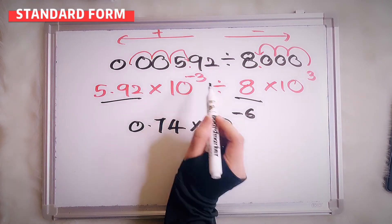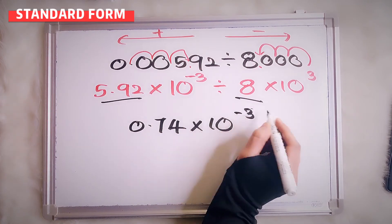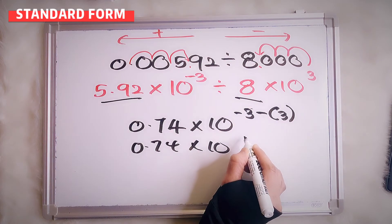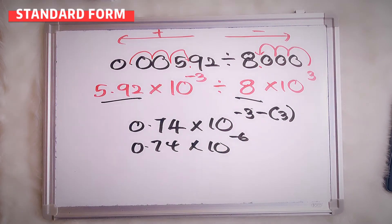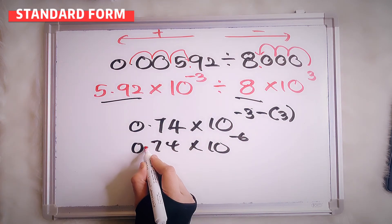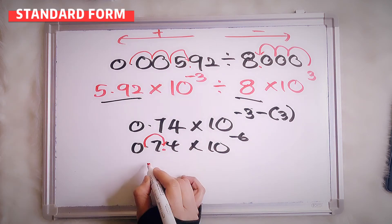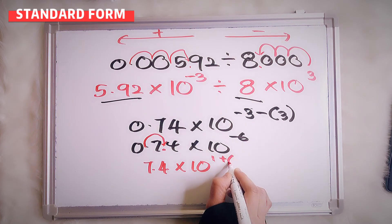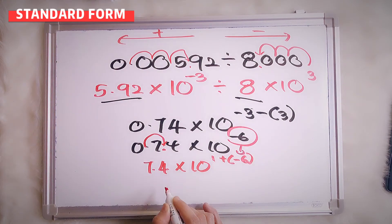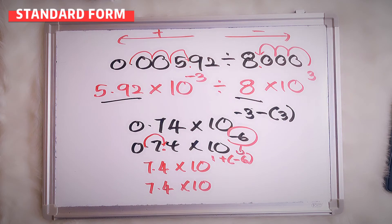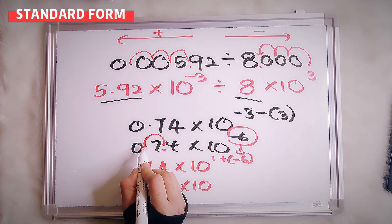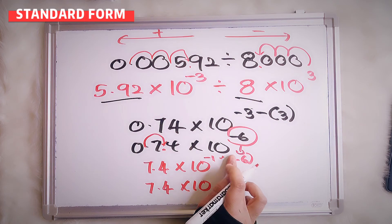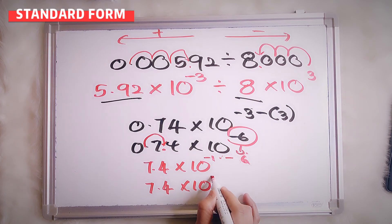Why negative 6? Because: negative 3 minus 3 equals negative 6. So 0.74 times 10 to the power of negative 6. We have to move the decimal from 0.74 to 7.4 — that's one move. So 7.4 times 10 to the power of 1 plus negative 6. We move to the right side, so this is negative. Negative plus minus is negative, so here also negative. Answer: 7.4 times 10 to the power of negative 7.